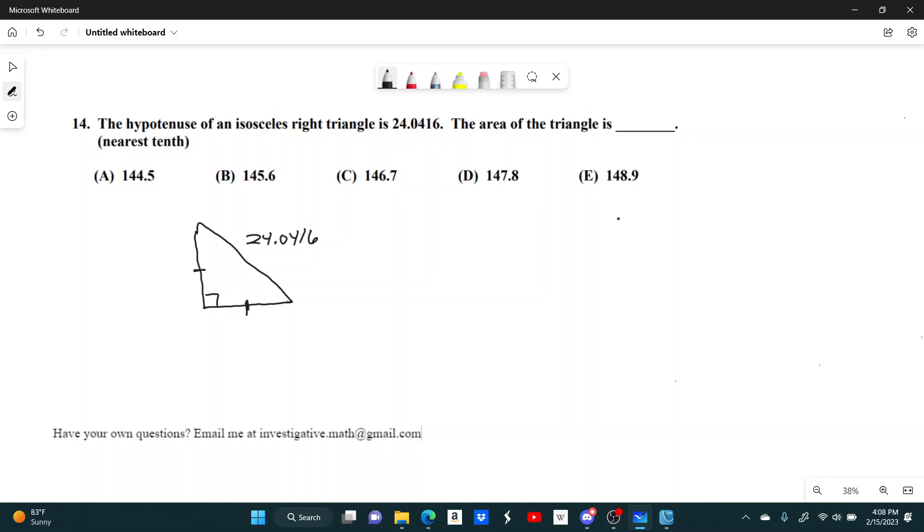Another name for an isosceles right triangle is a 45-45-90 triangle, and it's called that because the acute angles are both 45 degrees, and then obviously if it's a right triangle, there's going to be a 90 degree angle.